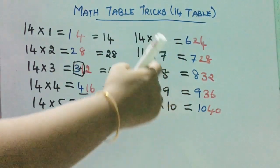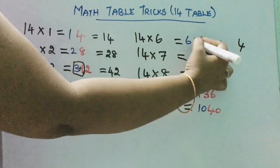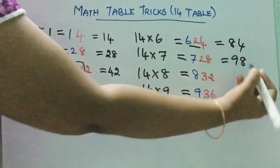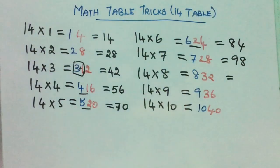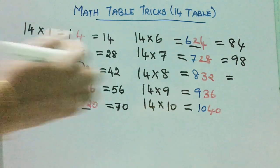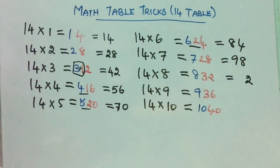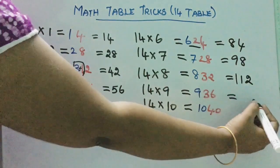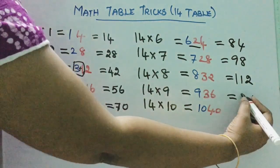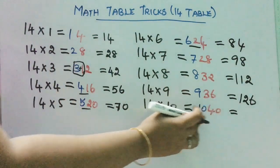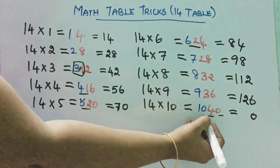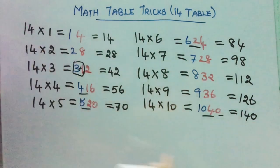14 sixes are: take 4 as-is, add 6 plus 2, you get 8, so 84. Take 8 as-is, 7 plus 2 gives 9, so 98. 14 sevens are 98. Up to here you are getting single digits only, so write as-is. For 14 eights: take 2 as-is and add 8 plus 3 — you get 11, so put 1, 1, 2 — that is 112. For 14 nines: take 6, add 9 plus 3, you get 12, so 126. For 14 tens: take 0 as-is and add 10 plus 4, giving 14, so 140.